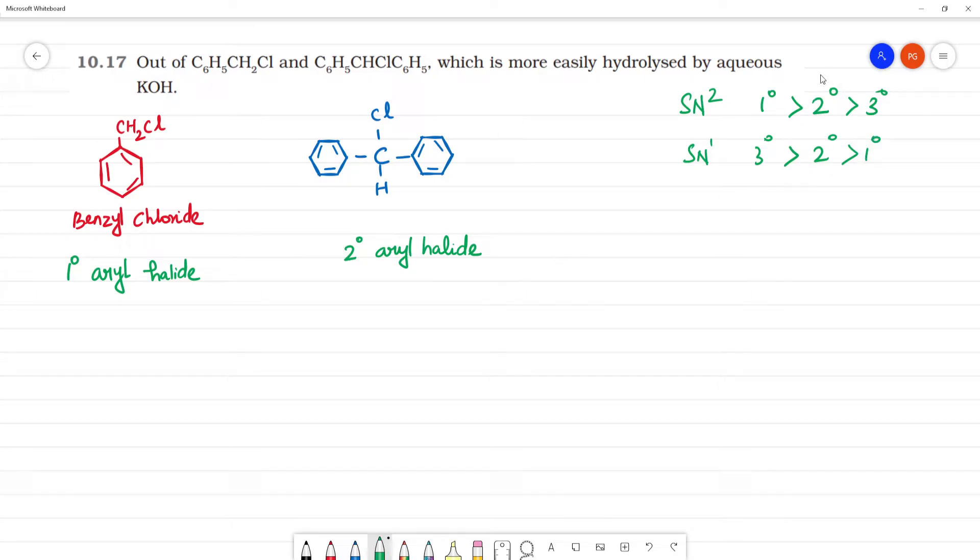So comparing these, secondary can undergo both SN1 and SN2, but primary benzyl chloride will undergo SN2 mechanism.